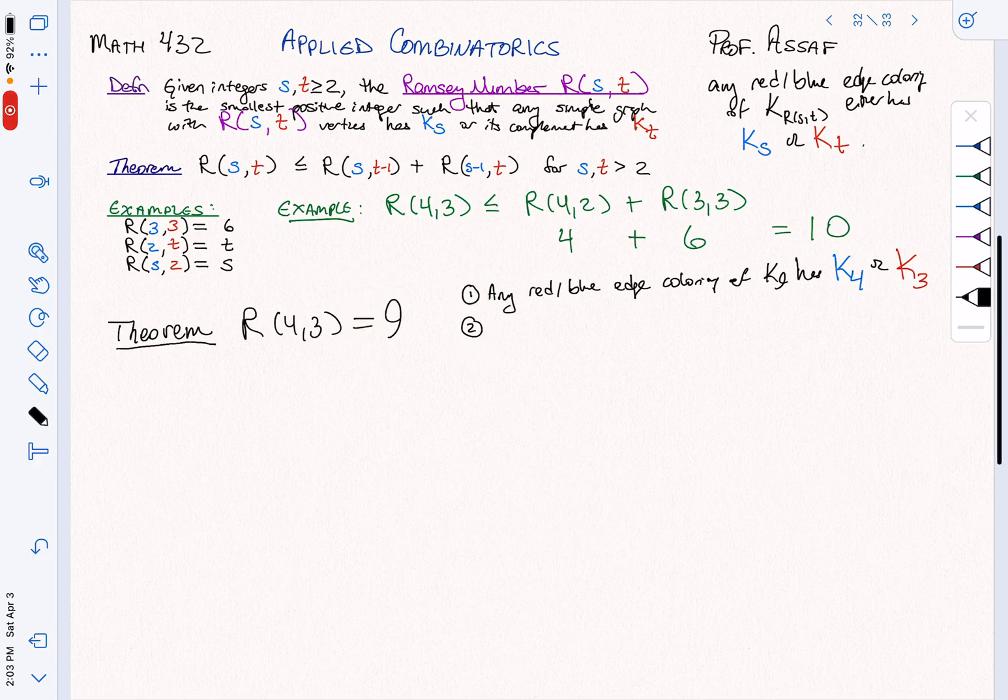The second statement is going to show it's bigger than 8, so it's at least 9. For this, we need to show just some edge coloring. Here we have to show that anything works. For the second part, we only have to prove there's one example that doesn't. Some red-blue edge coloring of K8 has no blue K4 or red K3. That's what we need to do.